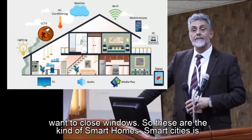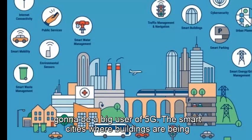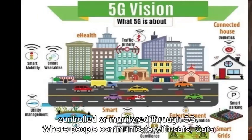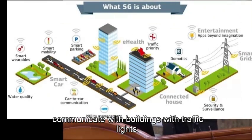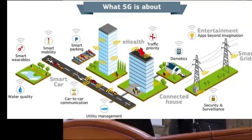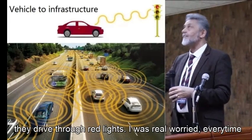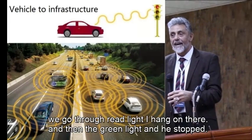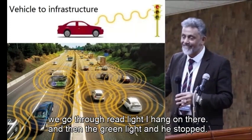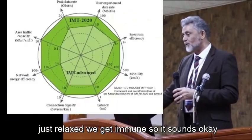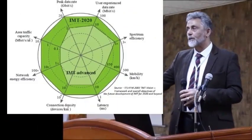Smart cities are going to be a big user of 5G — buildings being computerized, public transport monitored and controlled through 5G, and cars communicating with buildings and traffic lights. Speaking of traffic lights, there was a funny moment: I was in a taxi here and the driver went through red lights while I was hanging on, and then stopped at the green light — he was worried about the other direction. After a while you get used to it.